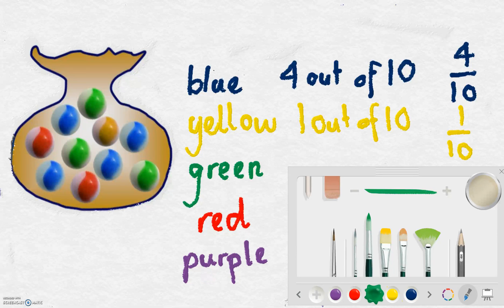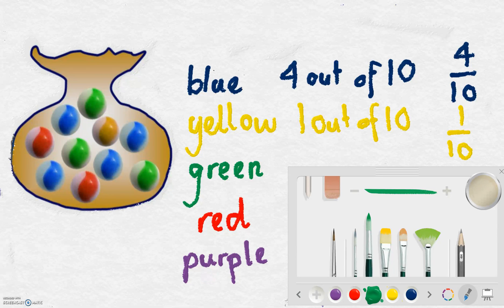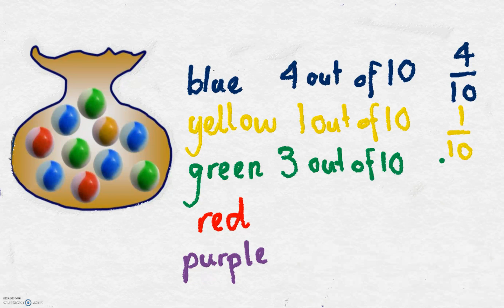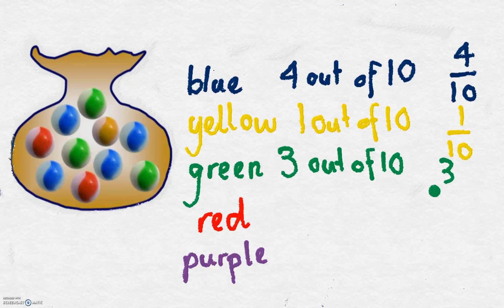Let's look at the green marbles. I have three green marbles. So I have a three out of ten chance because there's ten marbles in total. And I can write that as a fraction. Three out of ten.